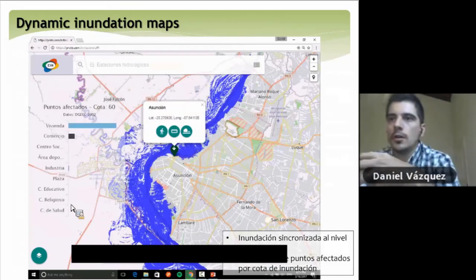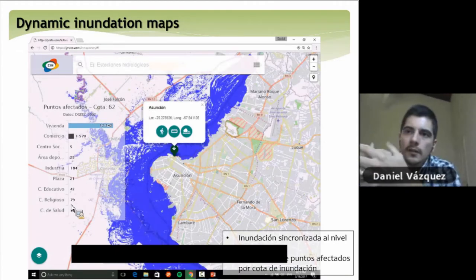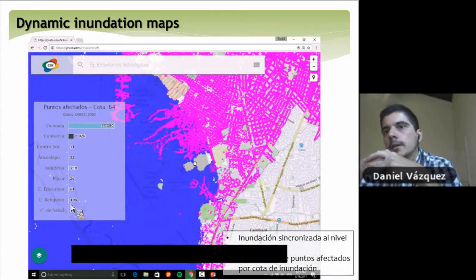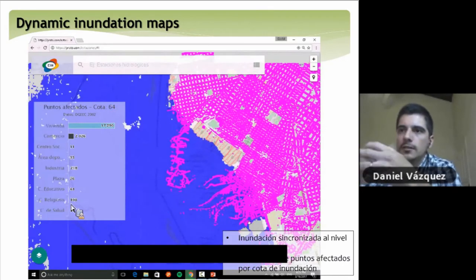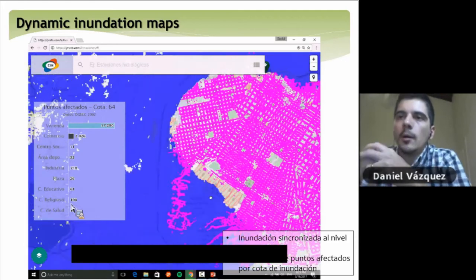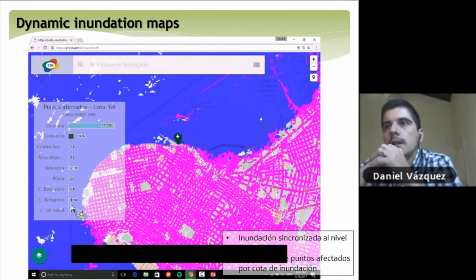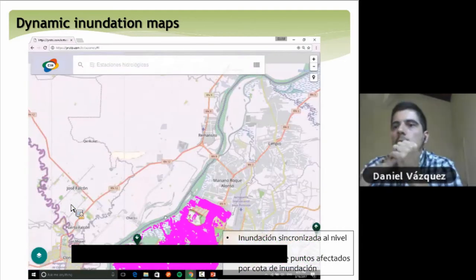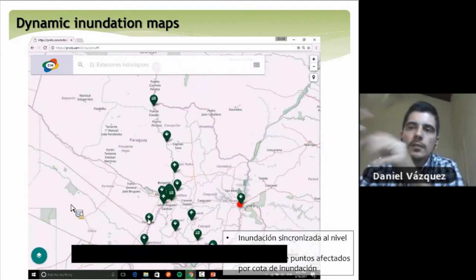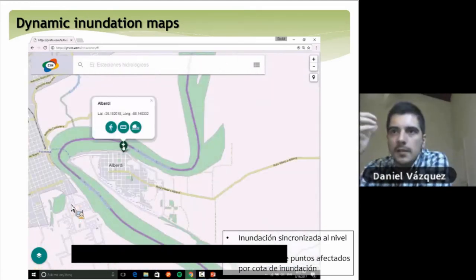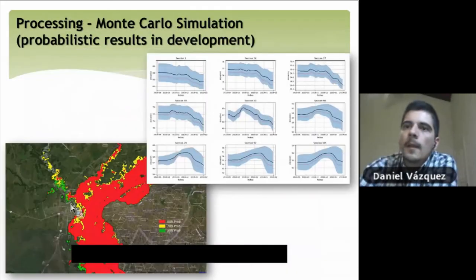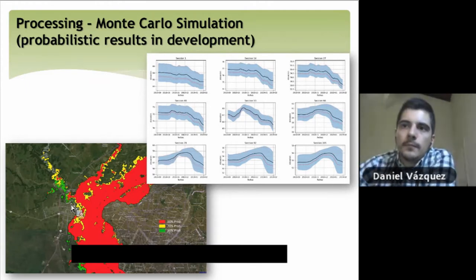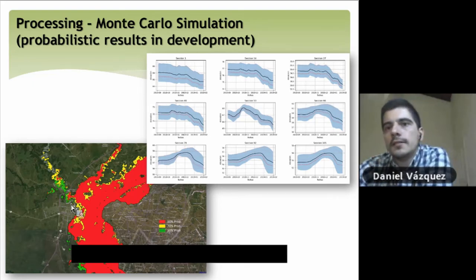There are other ways to show this information, and we try to do it with flood maps. The results from the hydrodynamic model are plotted in the app, and then we contrast this information with available cartographic data coming from census or from the OpenStreetMap project. We can generate on-the-fly calculations where you are able to see how many buildings, houses, schools, and parks are being affected at each time step of the model simulation. We also explored Monte Carlo simulation to generate probabilistic forecasting flowcharts and maps.